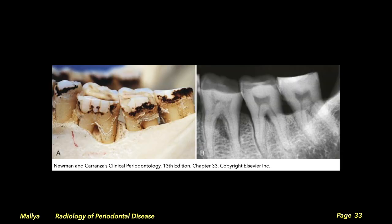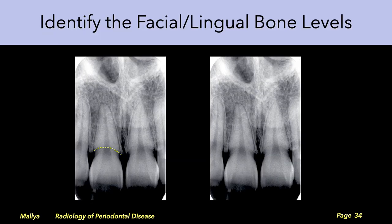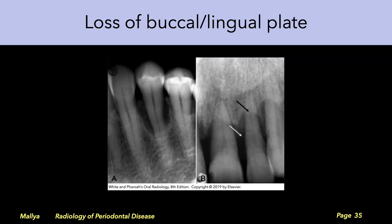Likewise, the facial and lingual plates may mask large vertical defects. Thus, in addition to identifying the interdental bone, also identify the facial and lingual bone levels where perceptible as separate. Be familiar with the appearance of different levels of resorption along the buccal and lingual plates. Careful examination will demonstrate two distinct radiopaque edges. This radiographic appearance should prompt clinical assessment with periodontal probings around the circumference of the tooth.